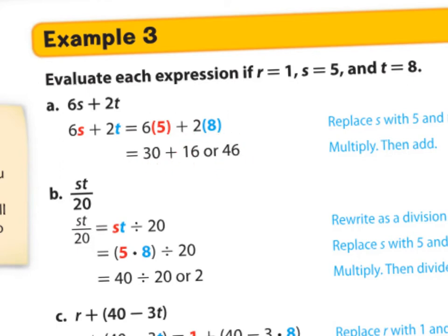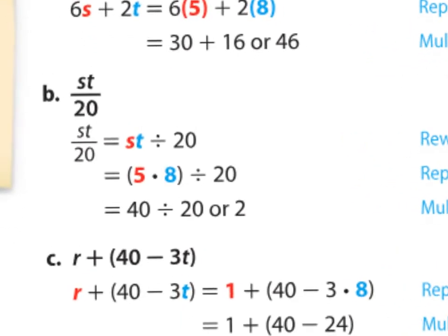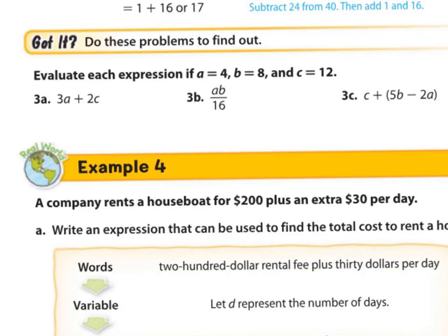Over here, we have st. So we are replacing two variables. 5 and 8. You see it? 5 times 8. And we are dividing it by 20. So first we multiply 5 times 8 is 40. And divide it by 20 is 2. If you are feeling confident with this skill, go ahead and pause the video and try 3a, b, and c. Pause now.